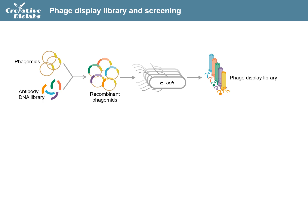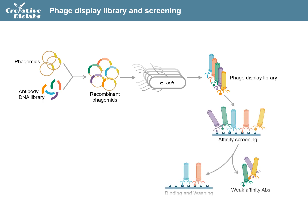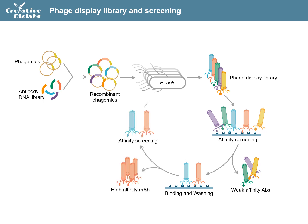A large antibody library and efficient selection are needed to isolate specific monoclonal antibodies from a cloned immunoglobulin repertoire. Diverse libraries are produced from about 10⁸ independent E. coli transformants infected with helper phage.